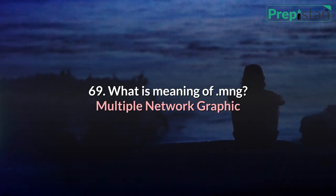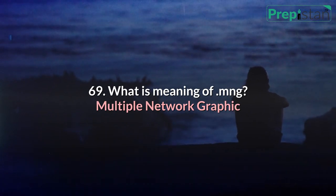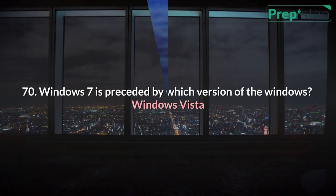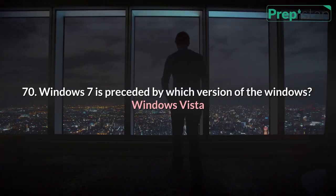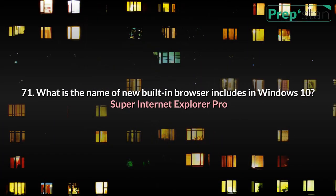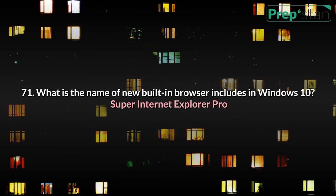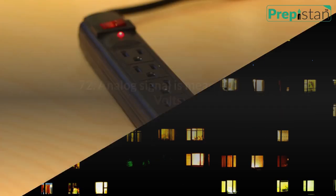69. What is the meaning of .mng? Multiple Network Graphic. 70. Windows 7 is preceded by which version of Windows? Windows Vista. 71. What is the name of the new built-in browser included in Windows 10? Microsoft Edge.